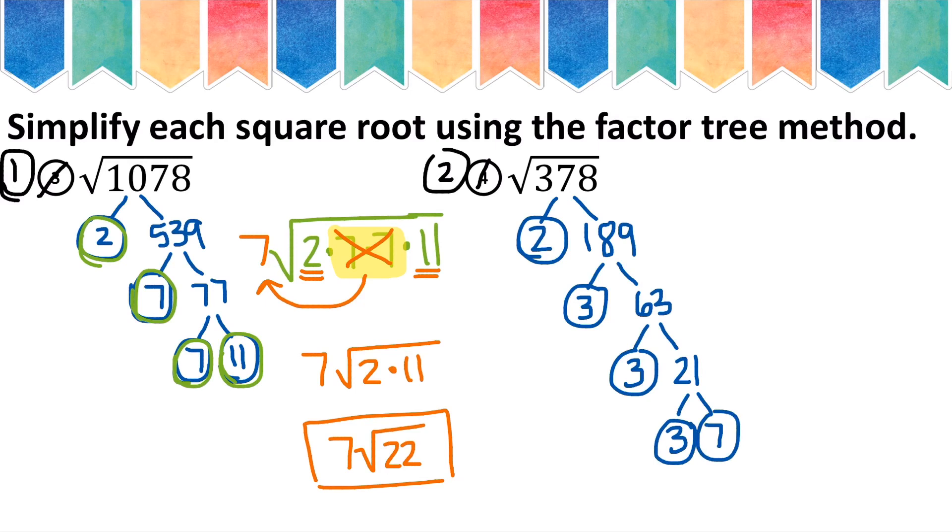So I will take my prime numbers, 2 times 3, times 3, times 3, times 7. And I'm looking for two numbers that are the same. Those two numbers get crossed out and moved to the front.